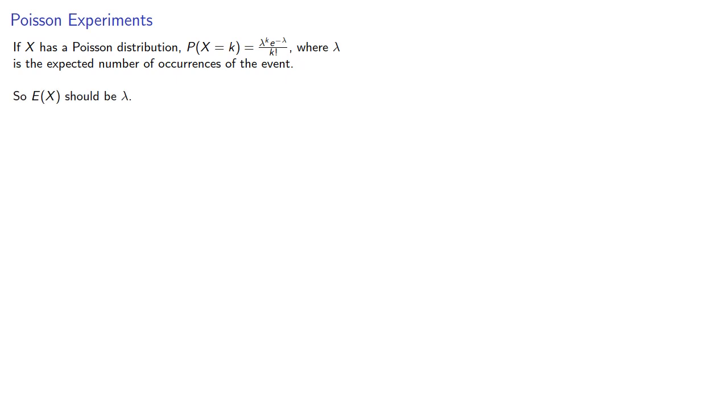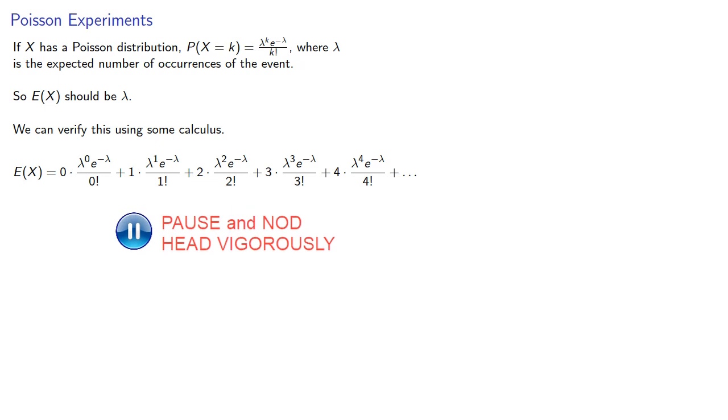But let's verify this. We can verify this using some calculus. So we'll set up our formula for the computation of the expected value. That's the number of occurrences times the probability that we observe the event occurring that many times. And we'll note that because we have a factorial in the denominator, some of these terms simplify.